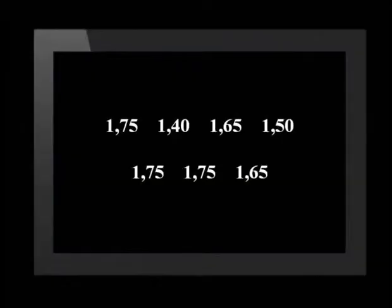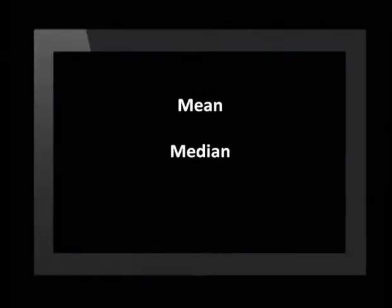These are their heights, all measured in metres. We can take these heights and find three types of averages. They're called the mean, the median and the mode. The mean is when we find the average by adding up the values we have and dividing the total by the number of values used.